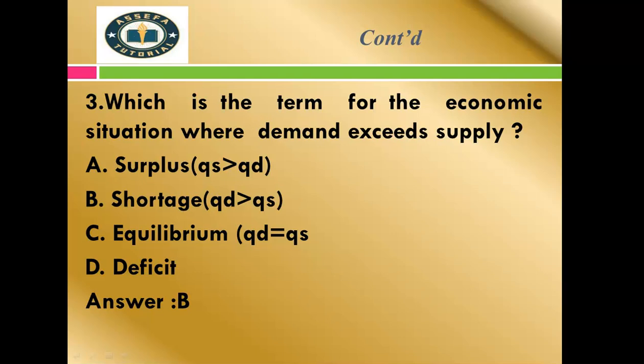The term for the economic situation where demand exceeds supply. Options: A) Surplus, B) Shortage, C) Equilibrium, D) Deficit. If demand and supply are equal, that is equilibrium. When quantity demanded is greater than quantity supplied, that is shortage. When quantity demanded is less than quantity supplied, that is surplus.